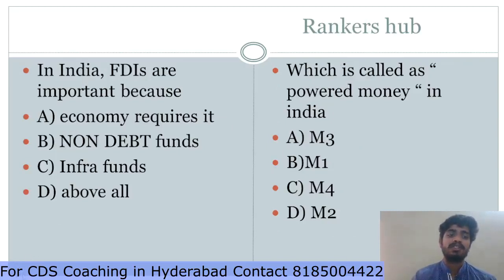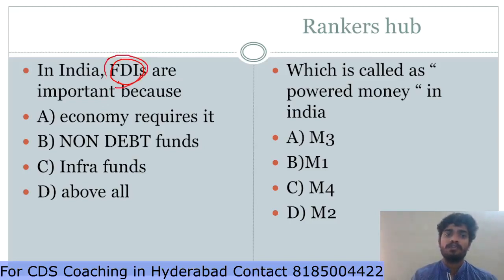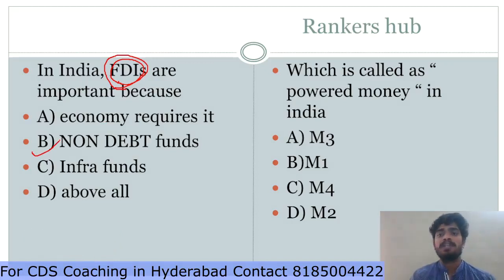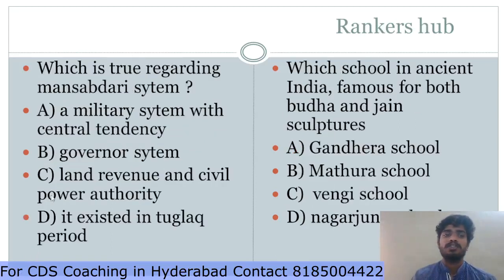FDIs are important because the Indian economy has various obligations — social, defense manufacturing, and others. FDI stands for Foreign Direct Investment. It is important because it is a non-debt fund. The next question asks which is called power money in India. M1, M2, M3, and M4 — M3 is the broad money because it includes commercial bank savings in the money evaluation, so M3 is the answer.